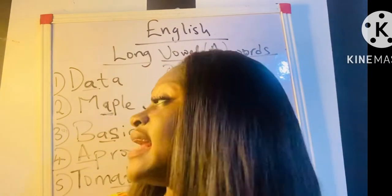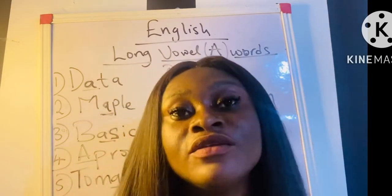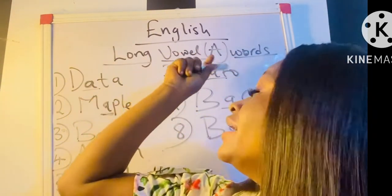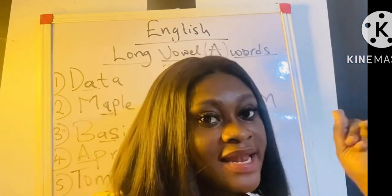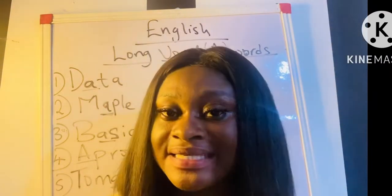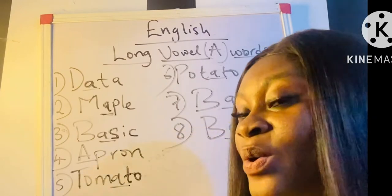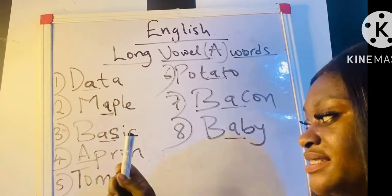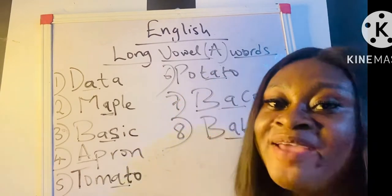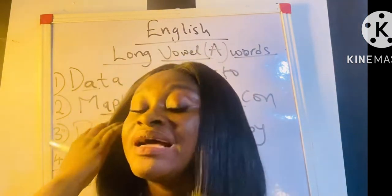When we started this class I told us that we are learning the ways of the sound A — they are all sounding the long vowel A. But the short vowel of this letter A is pronounced as 'ah'. In my last video I also covered the short vowel sound A. To recap, the eight words on the board are: data, maple, basic, apron, tomato, potato, bacon, and baby.